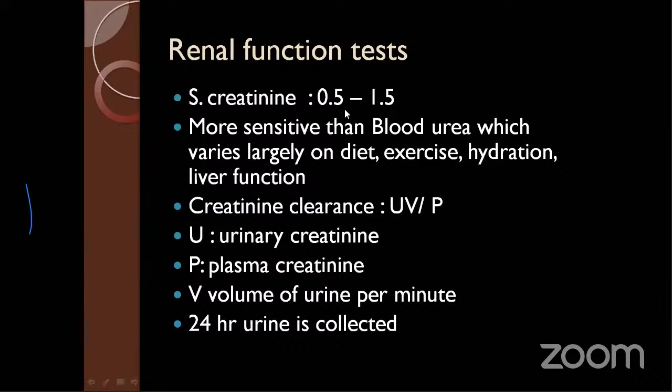The famous formula is UV/P — U for urinary creatinine, P for plasma creatinine, and V for volume of urine per minute. To calculate creatinine clearance, a 24-hour urine sample must be collected in a sterile glass jar, as urine should not undergo chemical denaturation. In nephro or urological wards, patients use thick-walled glass jars with a rubber cock on the lid. This 24-hour sample formula reflects renal function over a period of 24 hours.